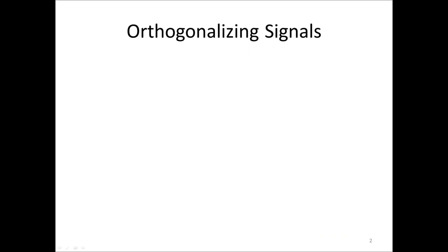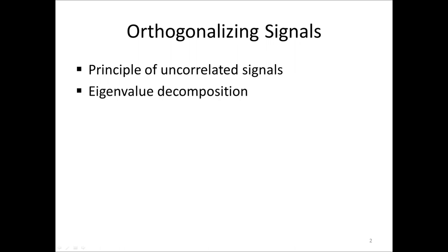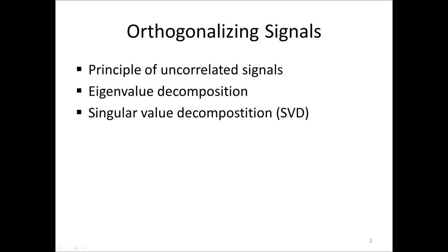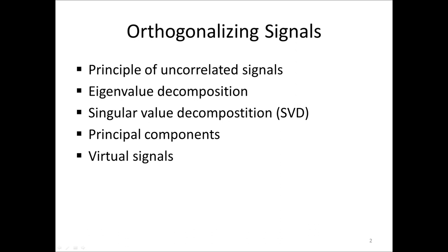In this lecture, we will discuss the following topics. We start by talking about the principles of uncorrelated signals, then present two ways to produce uncorrelated signals: the eigenvalue decomposition and the singular value decomposition (SVD). Eigenvalue decomposition can be used to produce principal components, which is very commonly used in noise and vibration analysis. Related to principal components is the concept of virtual signals, and we also discuss how these topics can be used for noise source identification.